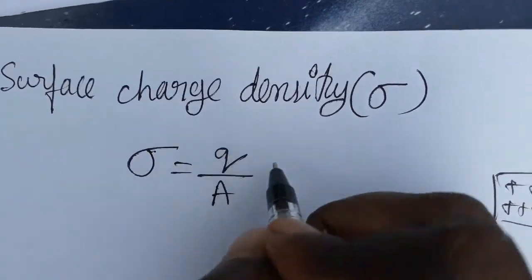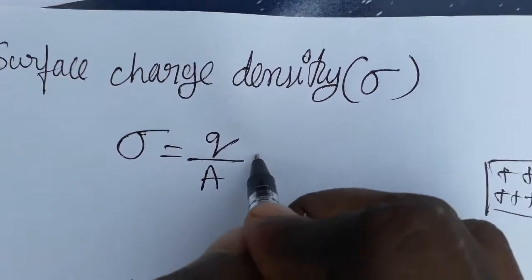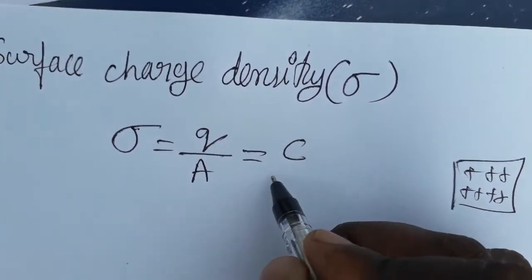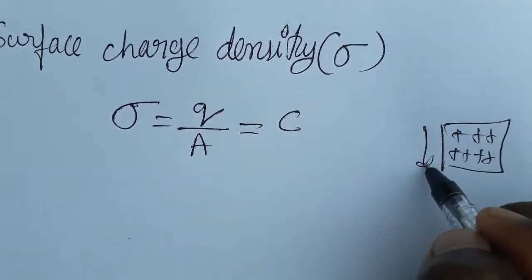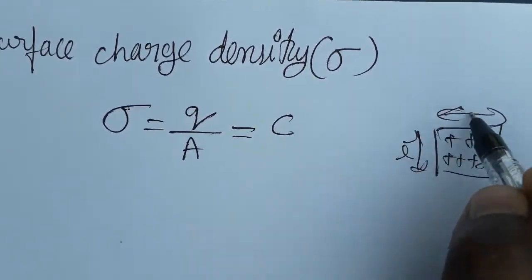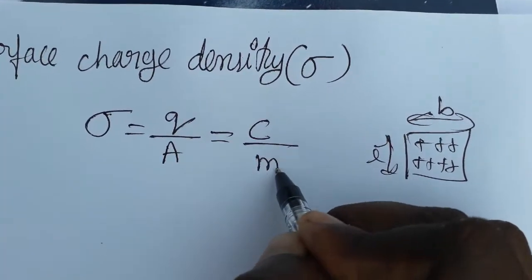Charge as a unit will be coulombs. Area, it is a sheet, so length into breadth. Length into breadth, it's meter into meter, meter square.